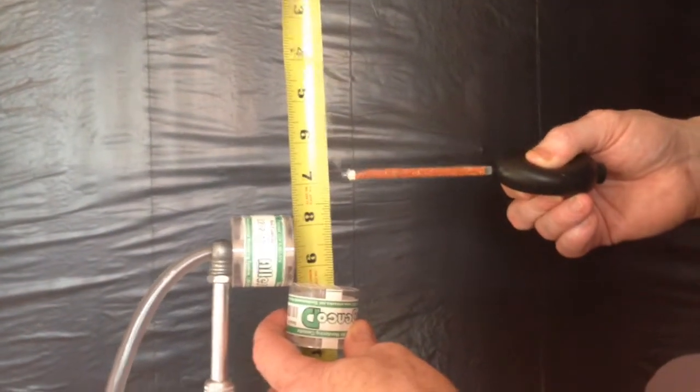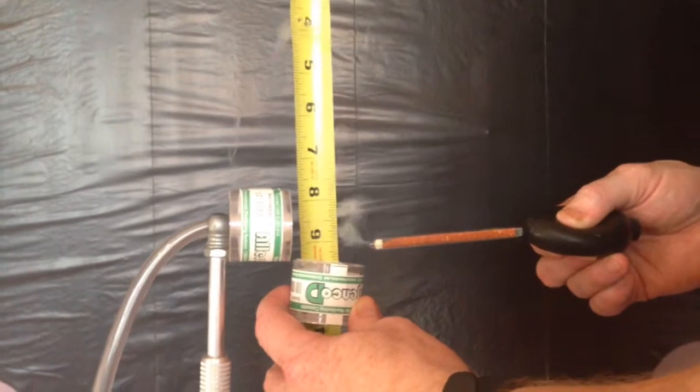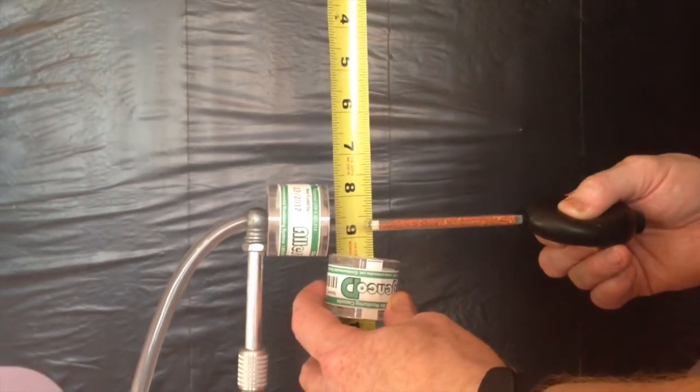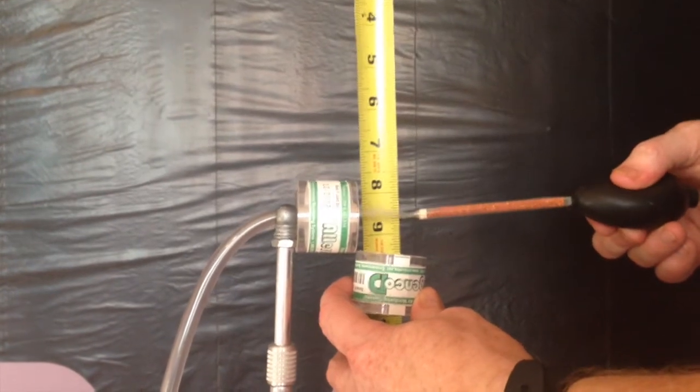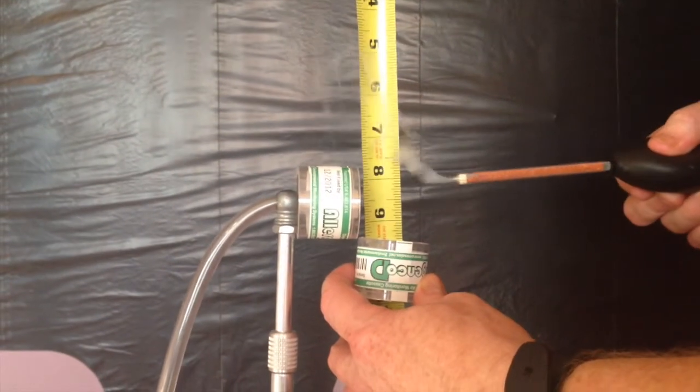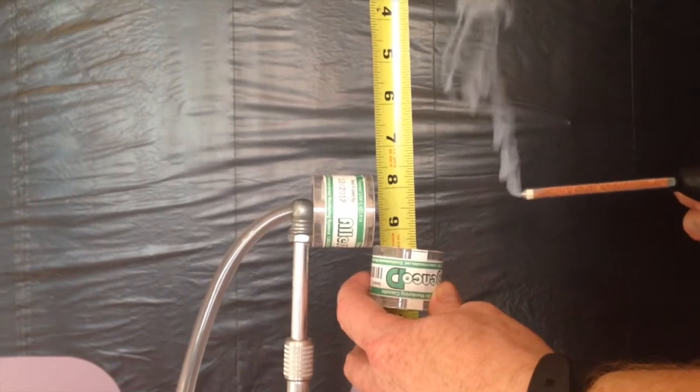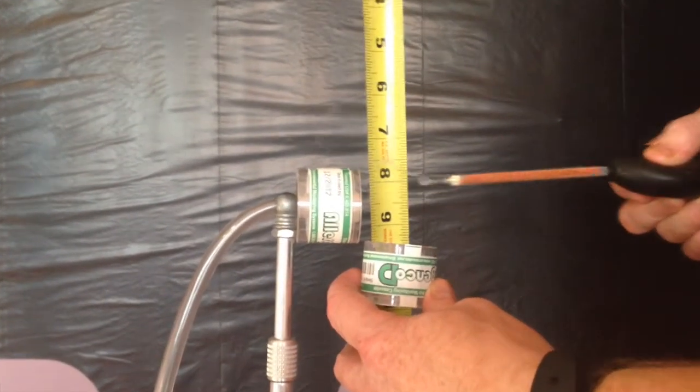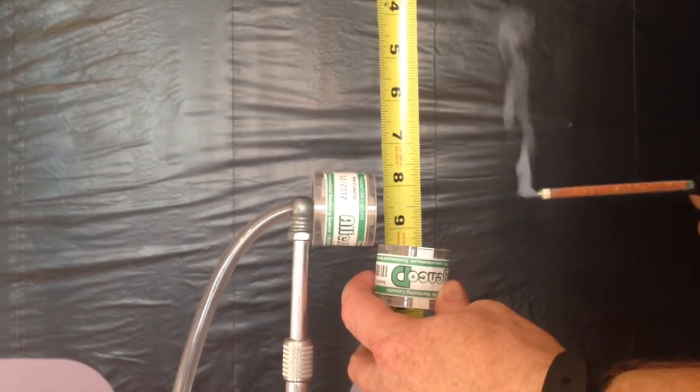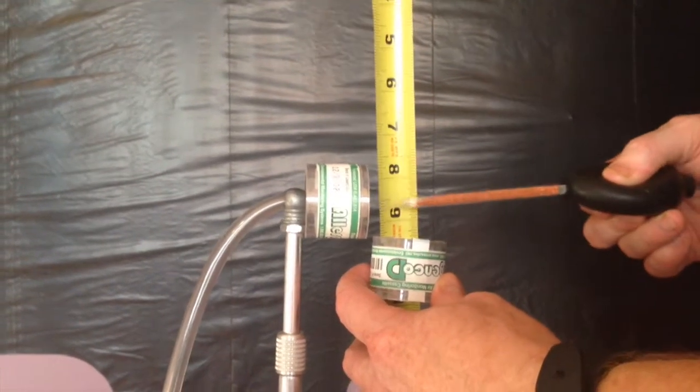The smallest conidia or spore measured is a species of Aspergillus at 1.8 micrometers. The larger the spore, the faster it settles. Look how small the capture zone is - it's no bigger than the cassette itself.